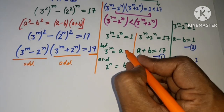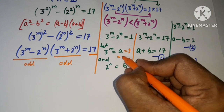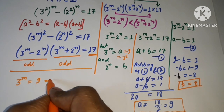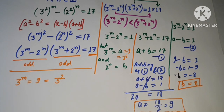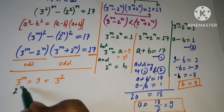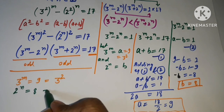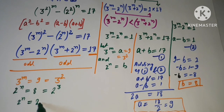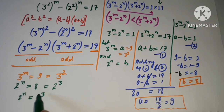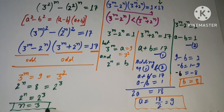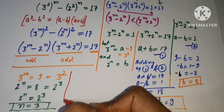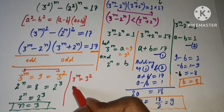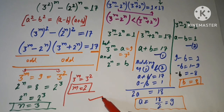So we have a equals 9 and b equals 8. We put the value back: a equals 3 to the power m equals 9, and 9 can be written as 3 squared, so m equals 2. Also b equals 2 to the power n equals 8, and 8 can be written as 2 to the power 3, so since the bases are the same, n equals 3. Therefore m equals 2 and n equals 3.